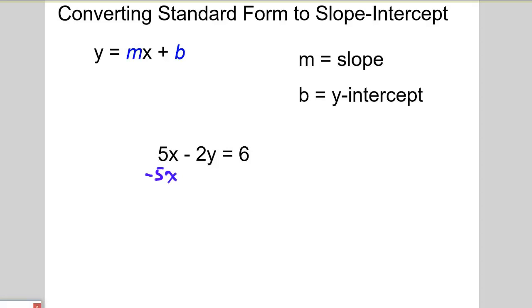So minus 5x equally from both sides, minus 5x. And we have a negative 2y is equal to. Now we like to put the variables up front. So I'm going to put the negative 5 up front and then add the 6 to the end of it.